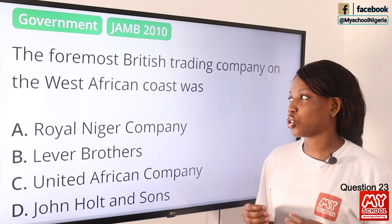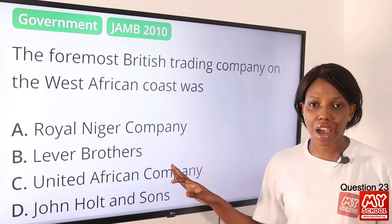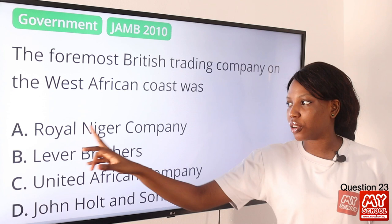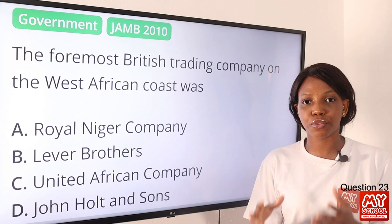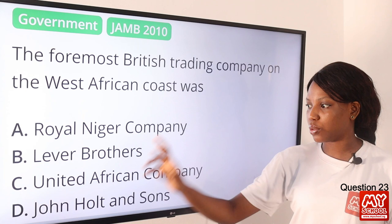Question 23. The foremost British trading company on the West African coast was? The answer is the United African Company. This was a British company that traded in West Africa and was formed in 1879. It was later changed to National African Company, and then again changed to the Royal Niger Company. The foremost British trading company was the United African Company, so option C is the best answer.